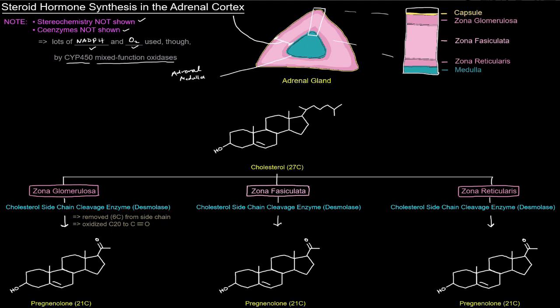The yellow exterior is the capsule — that's what the adrenal gland sits inside of. There are three layers I'm concerned with. The outermost layer, in the darker pink, is the zona glomerulosa, otherwise called the ZG. The zona glomerulosa is going to be important in making mineralocorticoids — that's mostly going to be its thing. The next layer, in the lighter pink, is the zona fasciculata, or ZF, which is in between the other two layers.